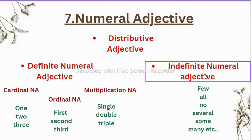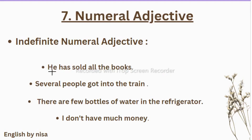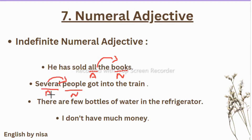Now let us see indefinite numeral adjectives. Unlike definite numeral adjectives, indefinite numeral adjectives only give a tentative numerical idea of the noun — they do not give us the exact number. The terms used include: few, all, little, some, much, many, several. Examples: He has sold all the books — 'all' is the indefinite numeral adjective for 'books,' and we don't know the exact number. Several people got into the train — 'people' is the noun and 'several' is the indefinite numeral adjective.